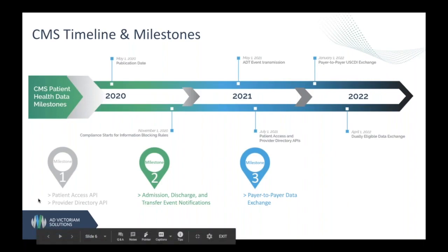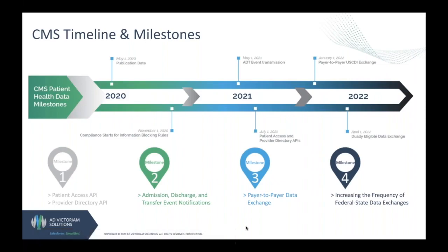The fourth milestone increases the frequency of the exchange of enrollee data for individuals that are dually eligible for Medicare and Medicaid to a daily feed, instead of a monthly feed, which will ensure that beneficiaries are getting timely access to the appropriate services.